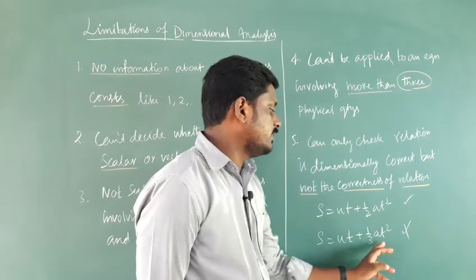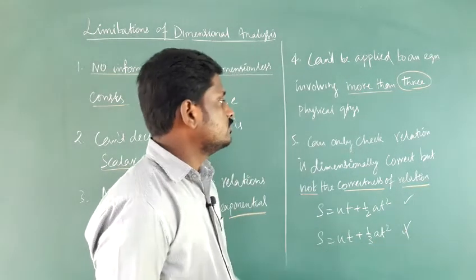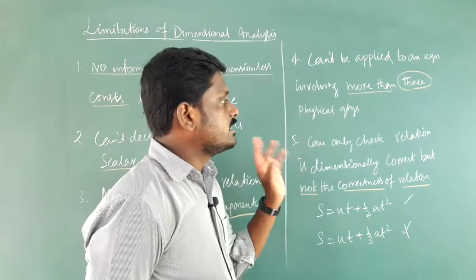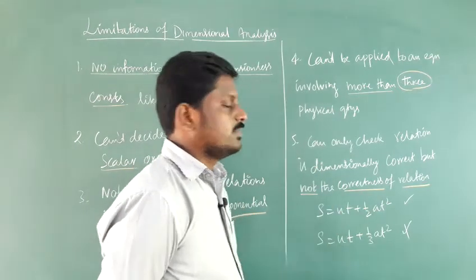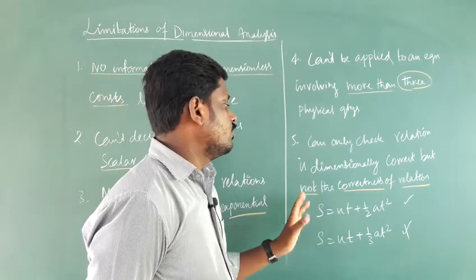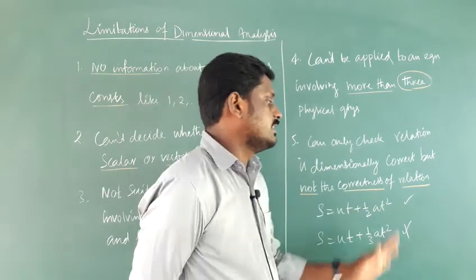The second version with 1/3 at² is wrong. So dimensional analysis can only check whether the relation is dimensionally correct, but it won't confirm the actual correctness of the relation. We can't say which one is exactly correct using dimensional analysis.